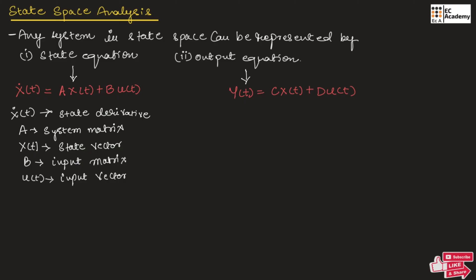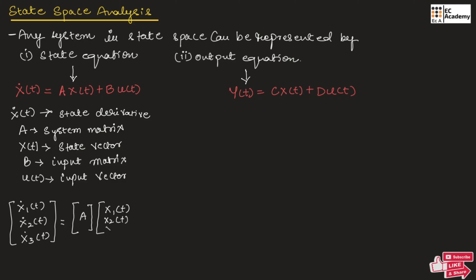Generally, the state equation can be written as: [x-dot-1(t), x-dot-2(t), x-dot-3(t), ...] equals matrix A multiplied with [x1(t), x2(t), x3(t)] plus matrix B multiplied with input vector u(t). Here, this matrix represents the state derivative, then the system matrix, then the state vector, then the input matrix, and the input vector.